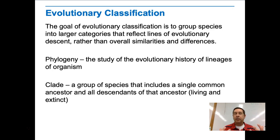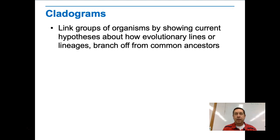We put similar organisms that have a common ancestor into groups called clads or clades. A clade is a group of species that includes a single common ancestor and all the descendants of that ancestor, both living and extinct.